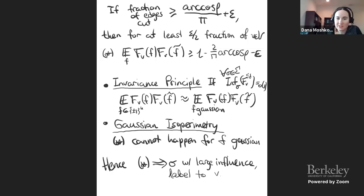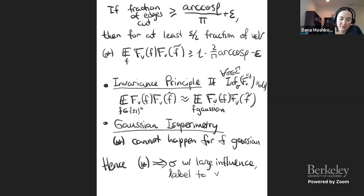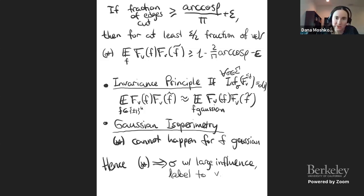This is the sketch of the KKMO analysis. Really what the construction does is make the MaxCut problem into an isoperimetric problem on functions associated with each vertex. What we showed is that if many edges are cut, it must be because the function fv is actually associated with a dictator — which corresponds to a labeling for the unique game.